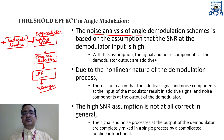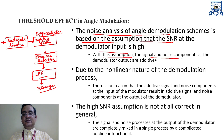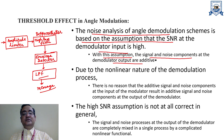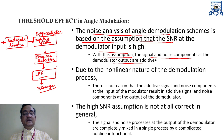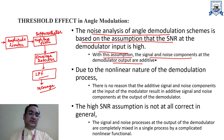The noise analysis of the angle demodulation scheme is based on the assumption that the SNR at the demodulated input is high. With this assumption, the signal and noise components at the demodulated output are additive. There is a relationship between the power spectral density and frequency — that is, the noise power versus frequency relation at the output of the FM circuit — and because of the nonlinear envelope detector there are certain limitations.